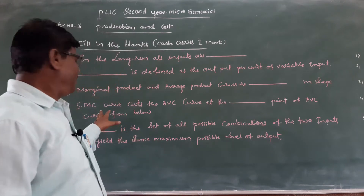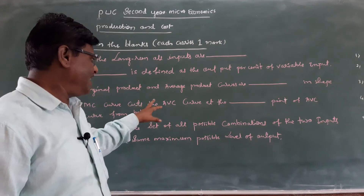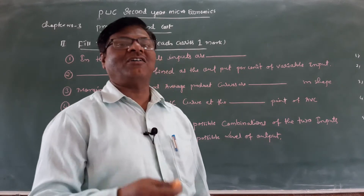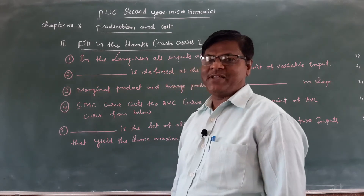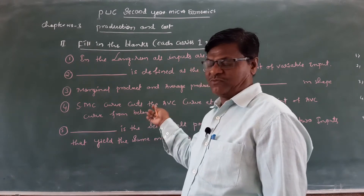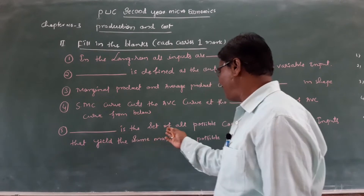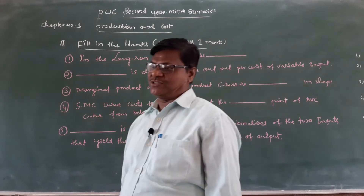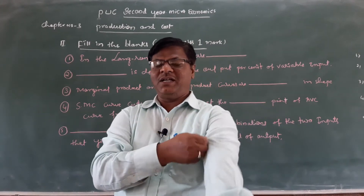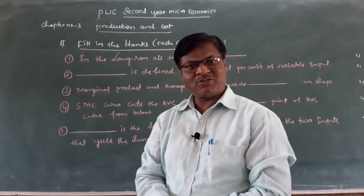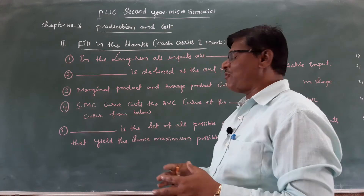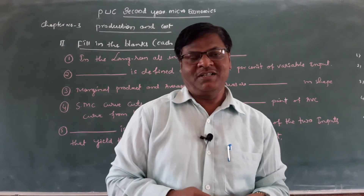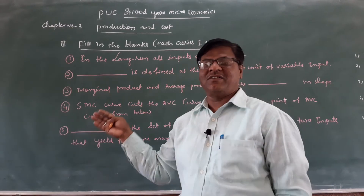Question 4: SMC curve cuts the AVC curve at the dash point of AVC — is it the maximum point or the minimum point? Question 5: Dash is the set of all possible combinations of two inputs that yield the same maximum possible level of output. I already told you about iso-quant curves — the iso-quant curve indicates the set of all possible combinations of two inputs that give the same level of output.